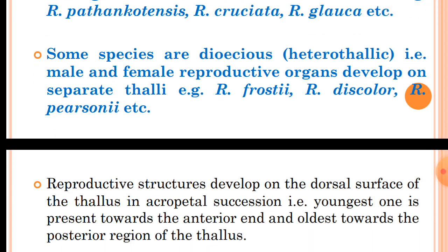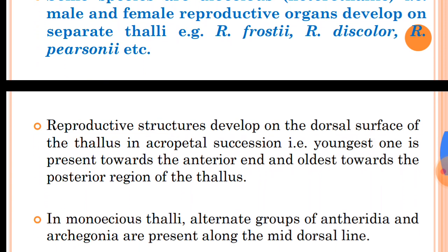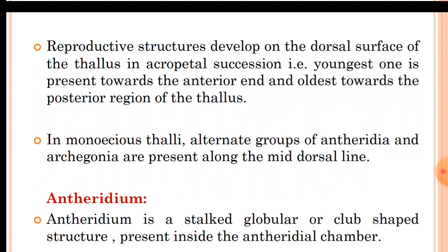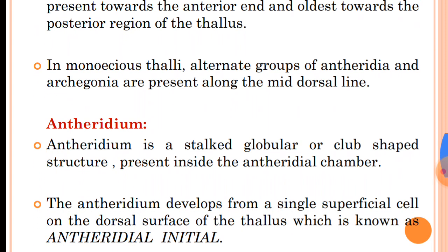Some species are dioecious, that is heterothallic — male and female reproductive organs develop on separate thalli; for example, Riccia frostii, Riccia discolor, Riccia piersonii, etc. The reproductive structures develop on the dorsal surface of the thallus in acropetal succession — the first-formed antheridium or archegonium is present towards the base, while the youngest one is towards the apex. In monoecious thalli, alternate groups of antheridia and archegonia are present along the mid-dorsal line.